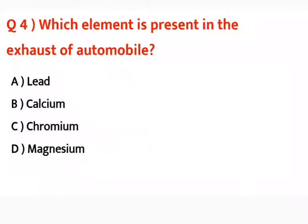Question number four: Which element is present in the exhaust of an automobile? Automobile ke jo exhaust jo nikalta hai, us mein koon sa element mojood hota hai? Correct answer is lead.